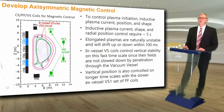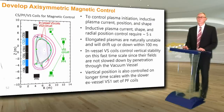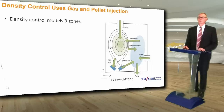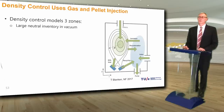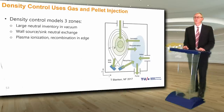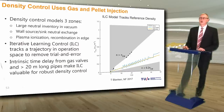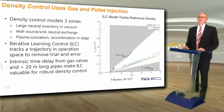Density control with gas and frozen hydrogen pellet injection is modeled with particle transport in three zones: a large neutral inventory in the vacuum region, a wall source and sink neutral exchange, and ionization and recombination in the plasma edge. An iterative learning control (ILC) model tracks the density trajectory in operation space with both gas and pellet fueling to remove experimental trial and error. An intrinsic time delay from the gas valve and 20-meter-long gas injection pipes makes ILC particularly valuable for robust density control.